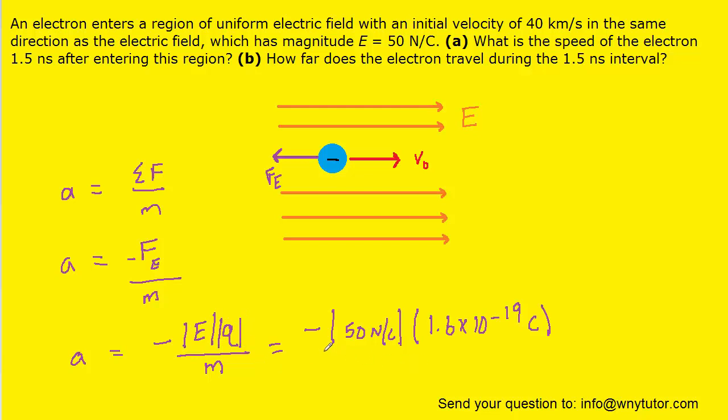And then we're going to divide by the mass of the electron, which is 9.11 times 10 to the minus 31 kilograms. And we end up with a tremendously large acceleration of roughly negative 8.78 times 10 to the 12 meters per second squared.